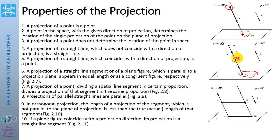For example, from the projection of the point on plane P, it is difficult to find the actual place of the point in space — it may be at several possible locations. The projection of a straight line is also a straight line, but when the straight line coincides with the direction of projections, its projection is a point.